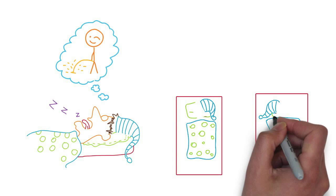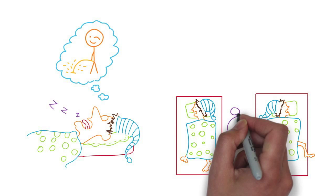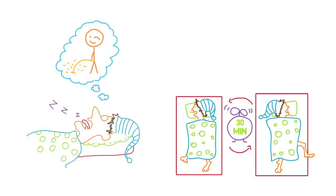Also, you naturally change sides in your sleep approximately every 30 minutes. You do this to balance your breath through each nostril.